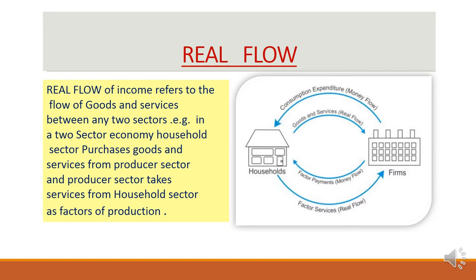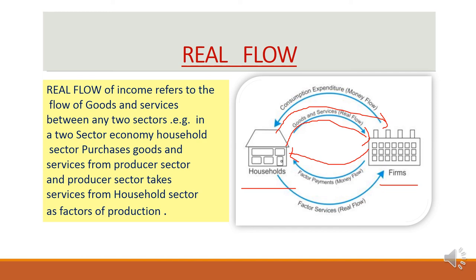Real flow refers to the flow of goods and services only between two sectors — no money is involved here. For example, in a two-sector economy, goods and services flow from the producer sector to the household sector, and as factors of production — land, labor, capital, and entrepreneurship — they flow out of the household sector towards the producer sector. When no involvement of money takes place between two sectors and only goods and services flow between them, that flow is known as real flow.